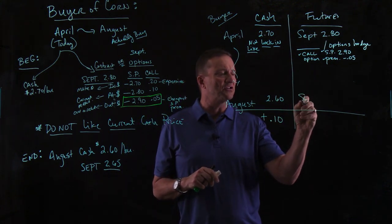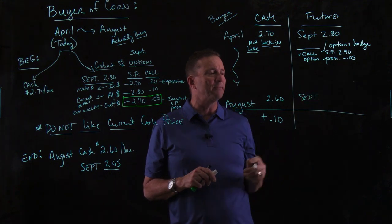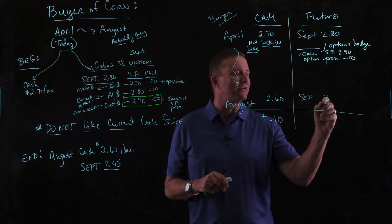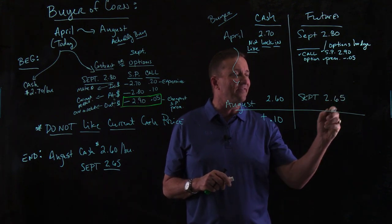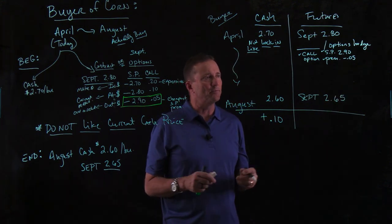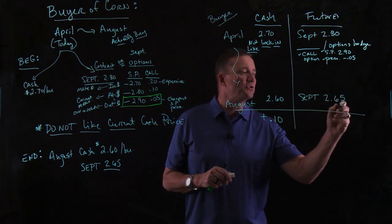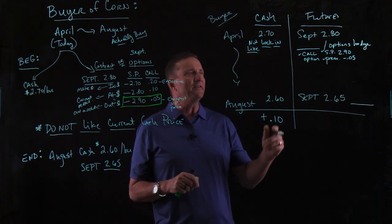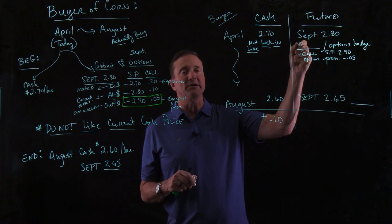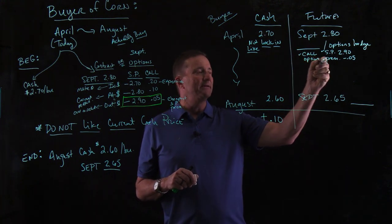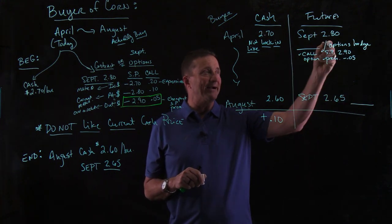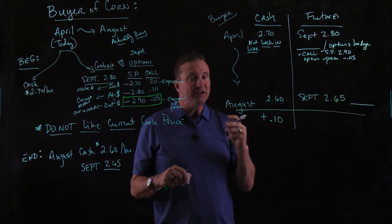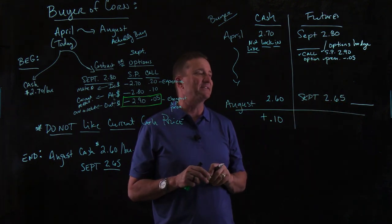The futures contract — we were looking at a September contract. That September contract is now trading for $2.65. When we come and take a look at this, do you want a position on that contract? Well, if you would have taken a position up here, it would have been buy $2.80, sell $2.65 — you would have lost $0.15 on that. So we didn't have to do that.